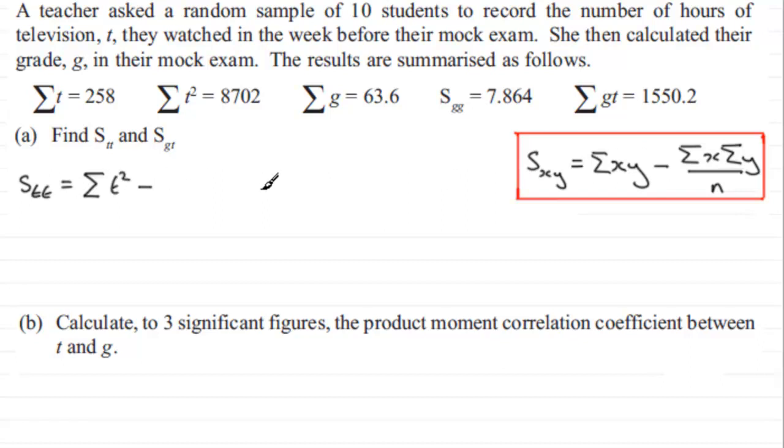And then we've got minus sigma t times sigma t again. So we've got sigma t all squared. So just put that in sigma t all squared and it's divided by n, the number of observations.